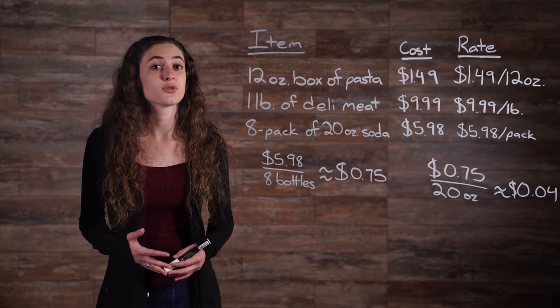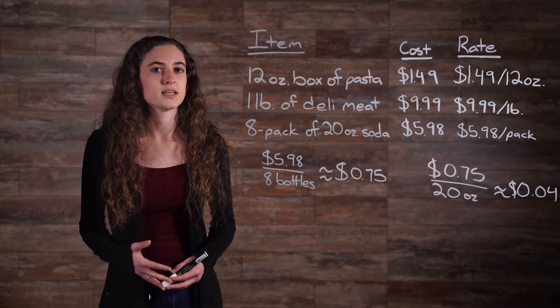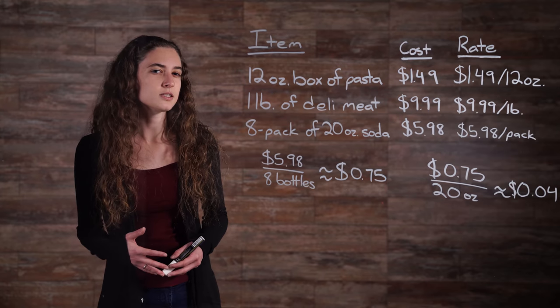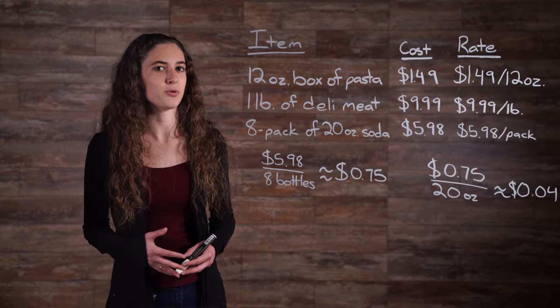The important thing to remember when analyzing unit rates is that the units must be the same. Let's consider another example to illustrate this point. Suppose you are on a road trip in Wyoming, and on the first day you covered 300 miles in 4 hours of mostly highway driving. You can quickly determine your average rate of speed as miles per hour with the following calculation.